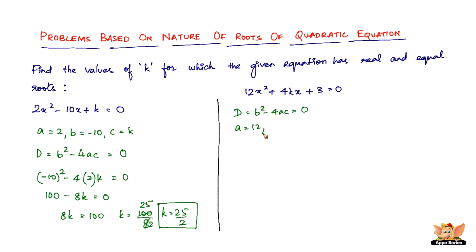Here we have a equals 12, b equals 4k, and c equals 3. So b² is (4k)² minus 4 times a is 12 times c is 3. So this should be equal to 0. So this is 4² is 16, k² is k², minus 4 times 3 is 12, 12 times 12 is 144 equals 0.